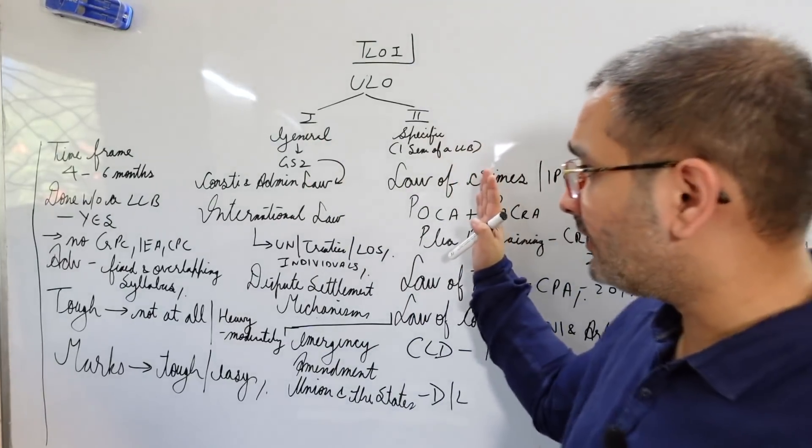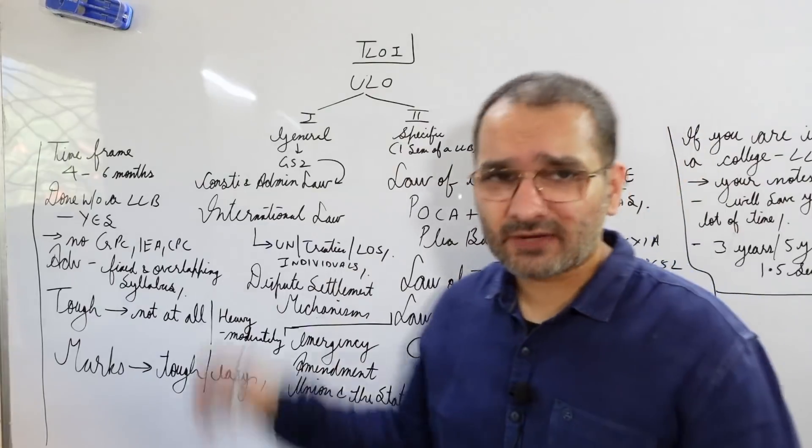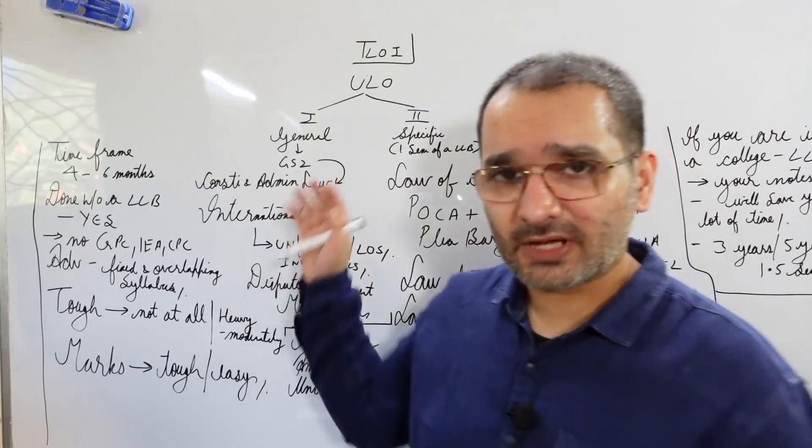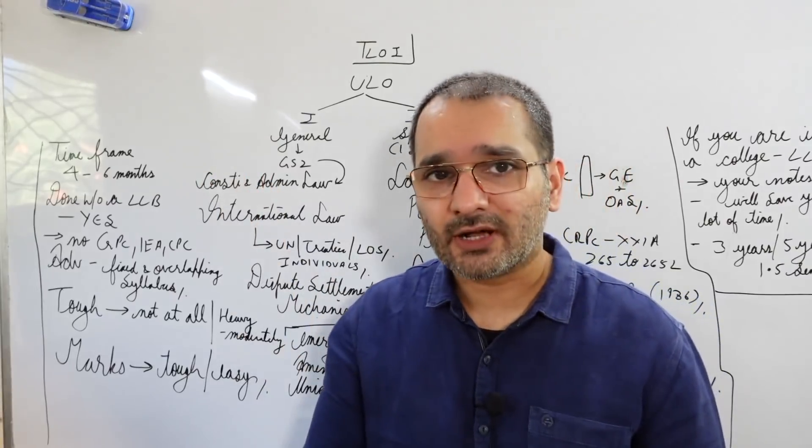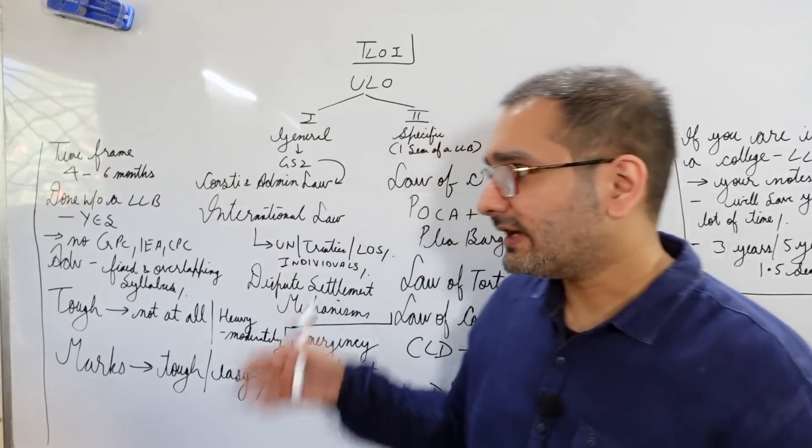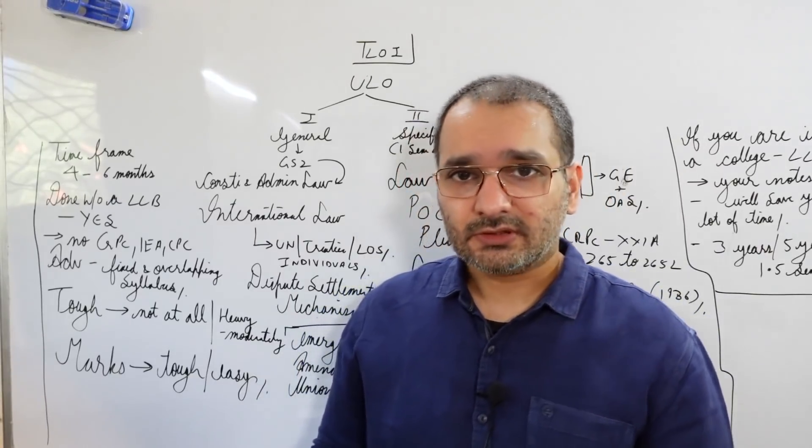Paper one and paper two under the law option - this is pretty much overlapping, you can say 50% of it is overlapping with GS2. You would have already studied this in your prelims as well because you have to cover our quality. And how do you cover our quality without going into the depths of the Constitution?